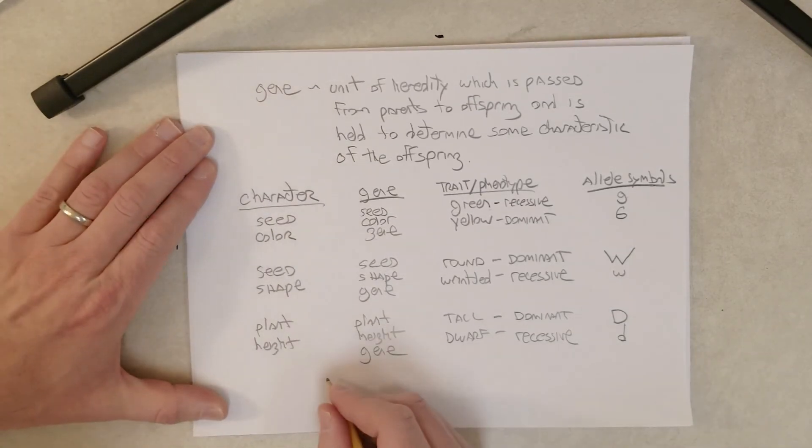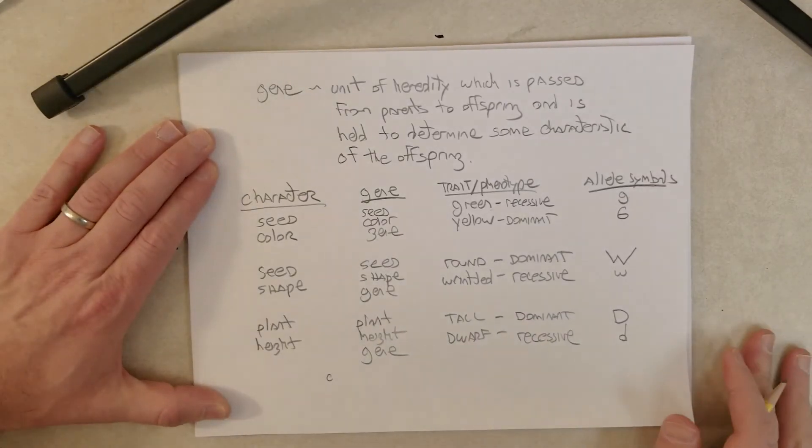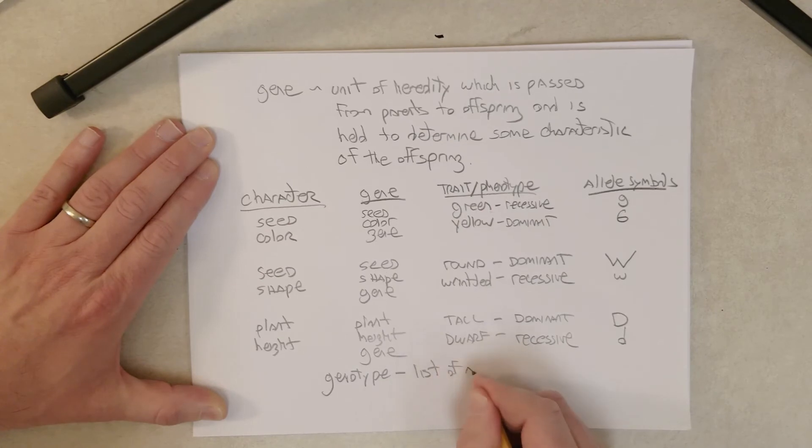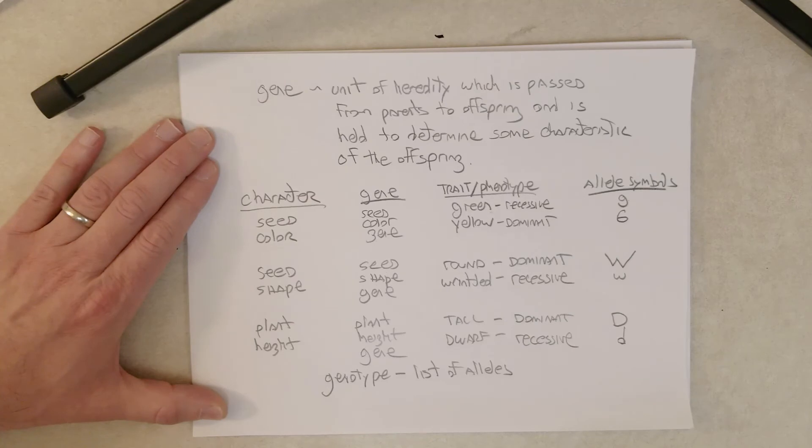Now, another term that's important. Let me see if this is, yes, we are still on camera. So genotype, genotype is a list of alleles for a gene or multiple genes in an organism. So here's a genotype, two big G's, right? So pea plants have two alleles for each gene. And this genotype, big G, big G, this means that that pea plant has two dominant alleles.